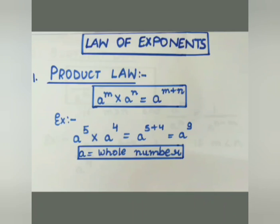Let's take an example: a to the power 5 multiplied by a to the power 4. Here the base is the same — a can be any whole number. So we do a to the power 5 plus 4, adding the powers as per our Product Law, giving us a to the power 9.